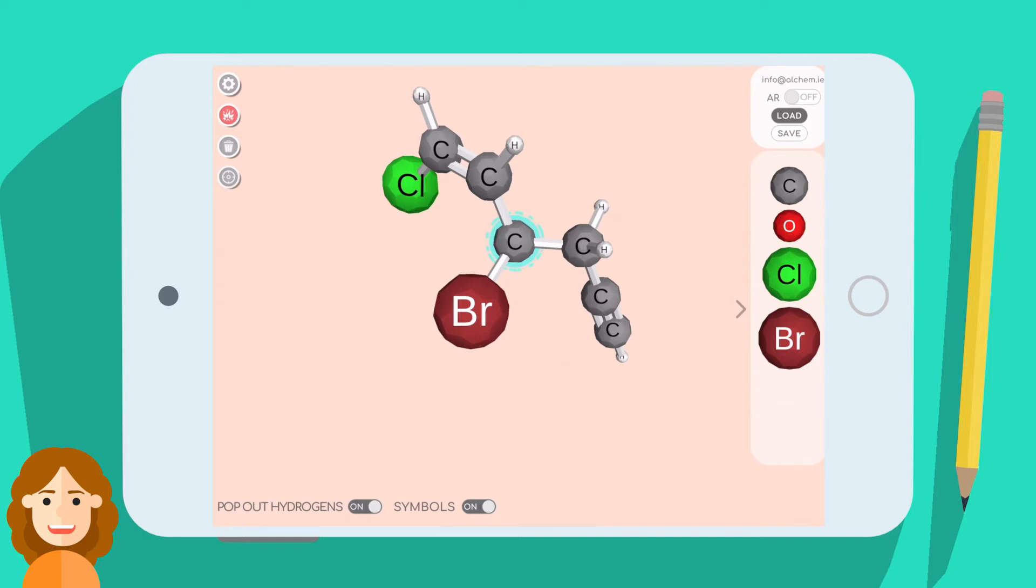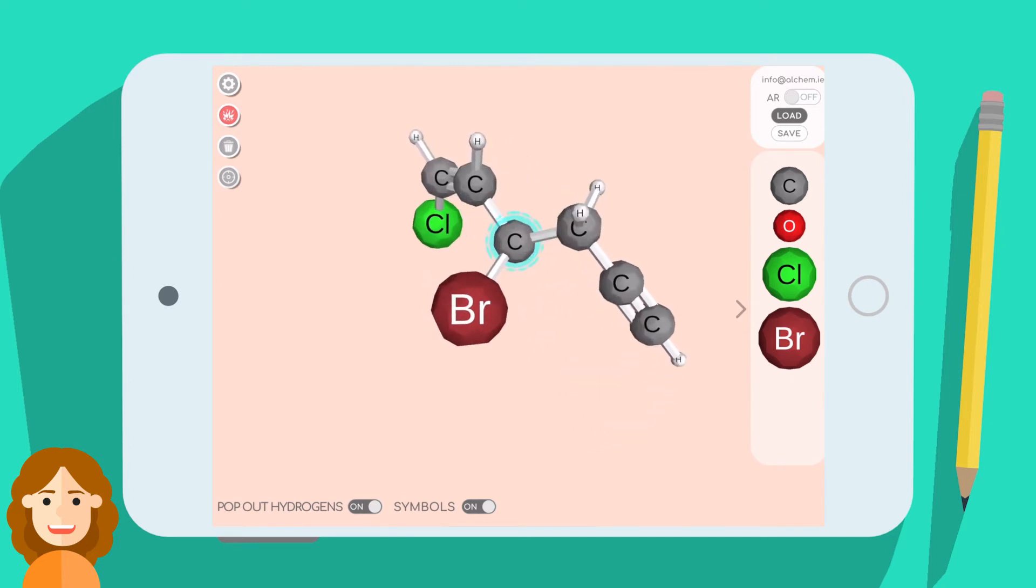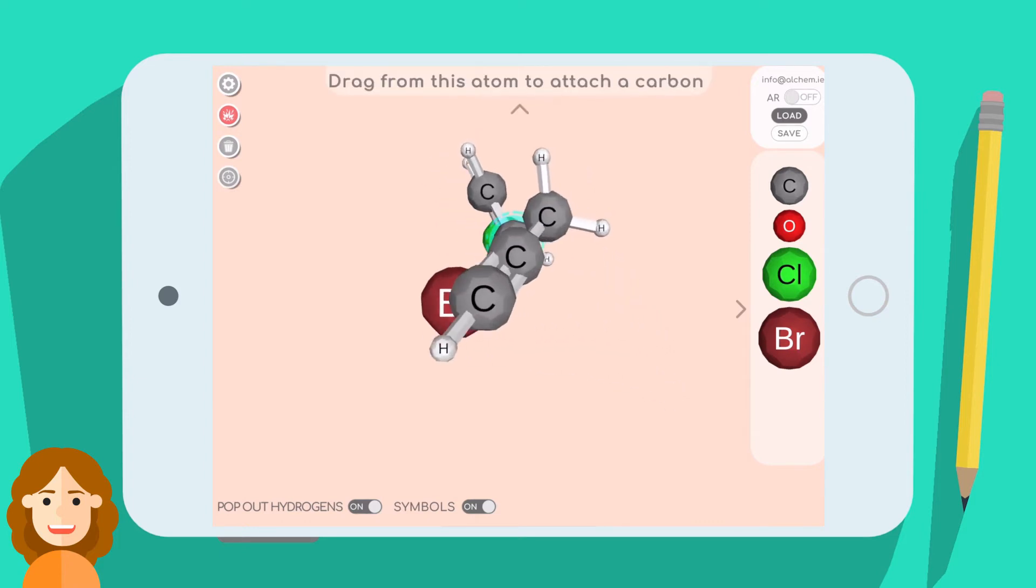Or if you want to do a Newman projection, you can rotate the molecule so you are looking down the desired bond. To view a different conformation, rotate the molecule so you can select the bond. Drag your finger to rotate the bond, then rotate the molecule so you are looking down the bond again.